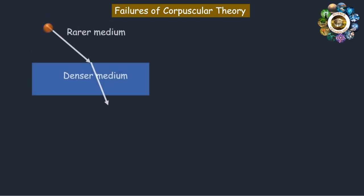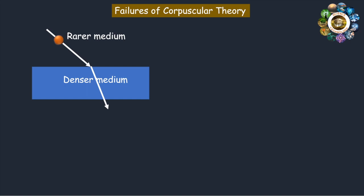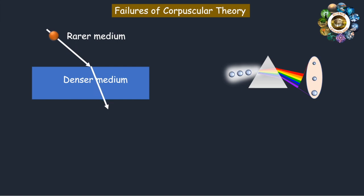So what are the failures of the corpuscular theory? Newton assumed that light travels faster in the denser medium than in the rarer medium, which has been proved wrong. The assumption that the different colors of light are due to differences in the sizes of corpuscles has no justification.